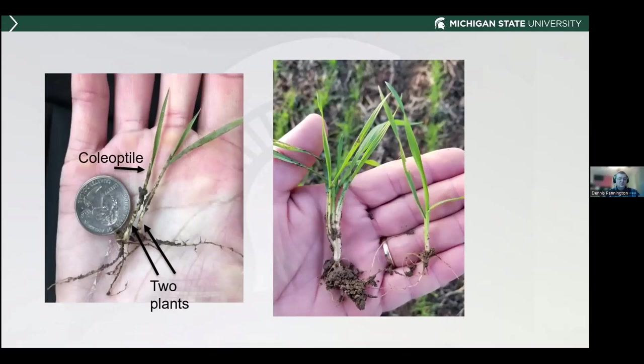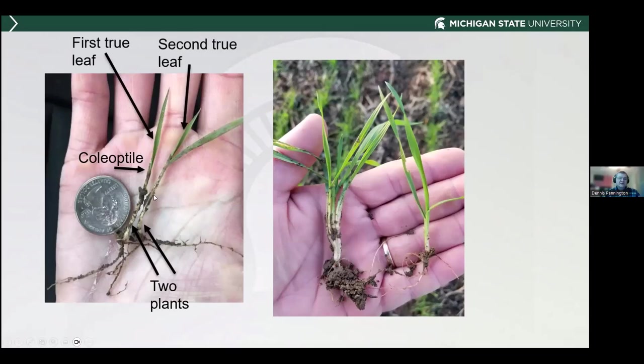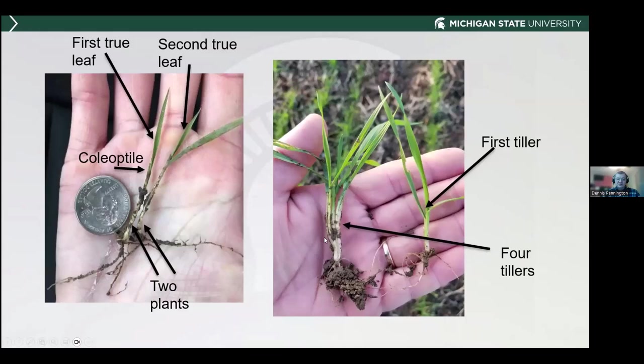When assessing stands, make sure you understand what's going on with the crop. In the left-hand picture, there are two plants — on the left, the coleoptile is at the base and the first true leaf is just coming out. Next to it, the second true leaf is coming out. On the right, the first tiller is just starting to emerge. Another plant shown already has about four tillers — ideally, if you could have this amount of tillering coming into spring, you're in pretty good shape.